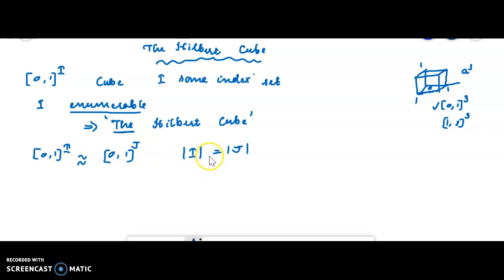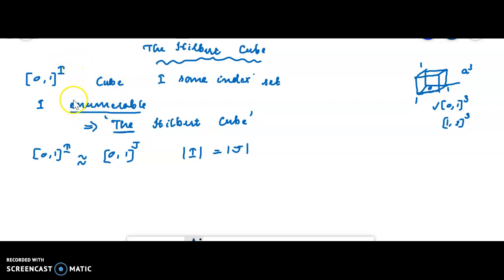If I and J are of the same cardinality, then [0,1]^I is homeomorphic to [0,1]^J. Since any enumerable set has the same cardinality as another enumerable set, we define only one cube such that the index is enumerable, and any cube with an enumerable index is homeomorphic to it. This is called the Hilbert cube. That is the concept of the Hilbert cube.